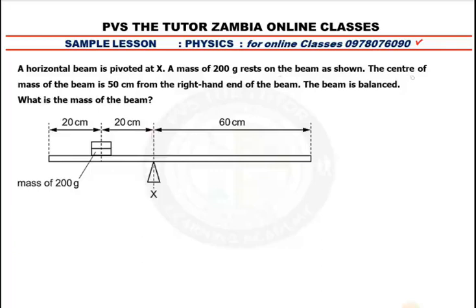Take note — the center of mass of the beam. When they say the center of mass, it's the point where the mass of an object is concentrated. It's 50 centimeters from the right-hand end of the beam. This is the right end of the beam and that is the left.